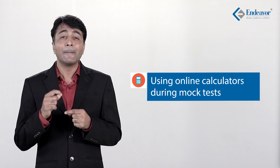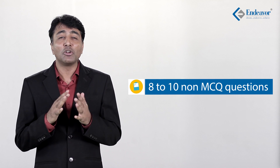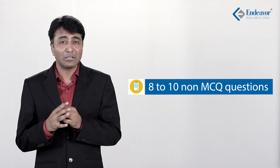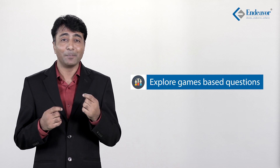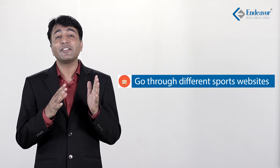The second thing to start working on is usage of the online calculator during mock CATs. There will be around 8 to 10 non-MCQ questions which will demand precise calculation, so do not shy away from using the online calculator - some questions will require it, so it makes sense to use that facility during your mocks. Lastly, try to explore games-based questions, specially looking at CAT 2005 as a base. Practice those questions, understand the logic, and go through information on different sports websites. This will help you comprehend the data and get acquainted with jargons typically used in such sets.